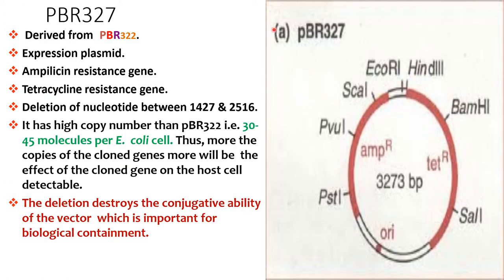PBR327 is an expression plasmid derived from PBR322. It consists of ampicillin and tetracycline resistance genes. Deletion of nucleotides between positions 1427 and 2516 was made to create PBR327 from PBR322. It has a higher copy number than PBR322, that is 30 to 40 copies per E. coli cell, meaning more copies of cloned genes are detectable. The deletion also destroys the conjugative ability of the vector, which is important for biological containment.